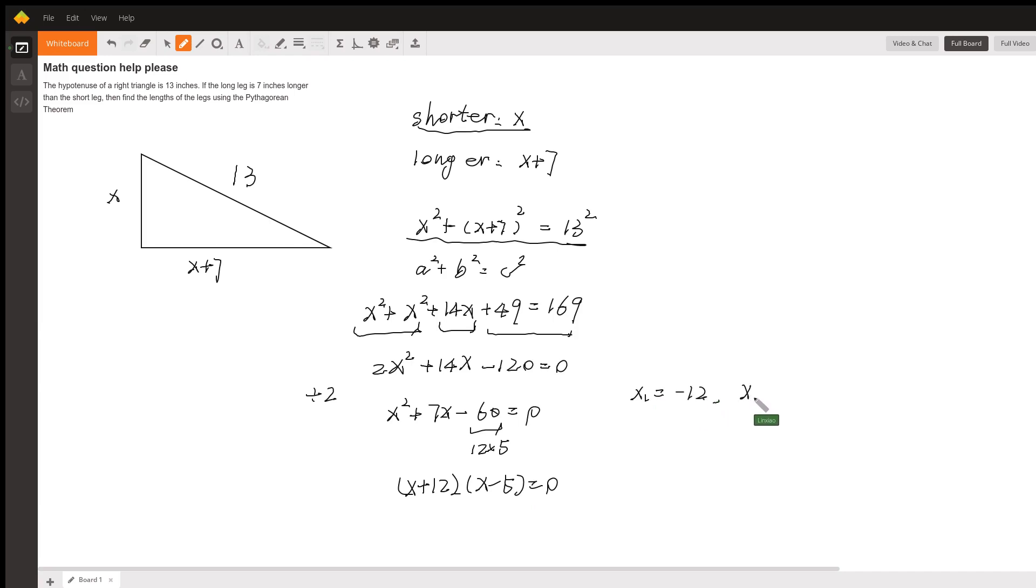So in this case x1 is equal to negative 12 and x2 is equal to 5. But because x is the length of a leg of a right triangle, negative 12 doesn't make sense. So x has to equal 5, that means the shorter leg is 5 and the longer leg is 5 plus 7 which is equal to 12. So the lengths would be 5, 12, and 13.